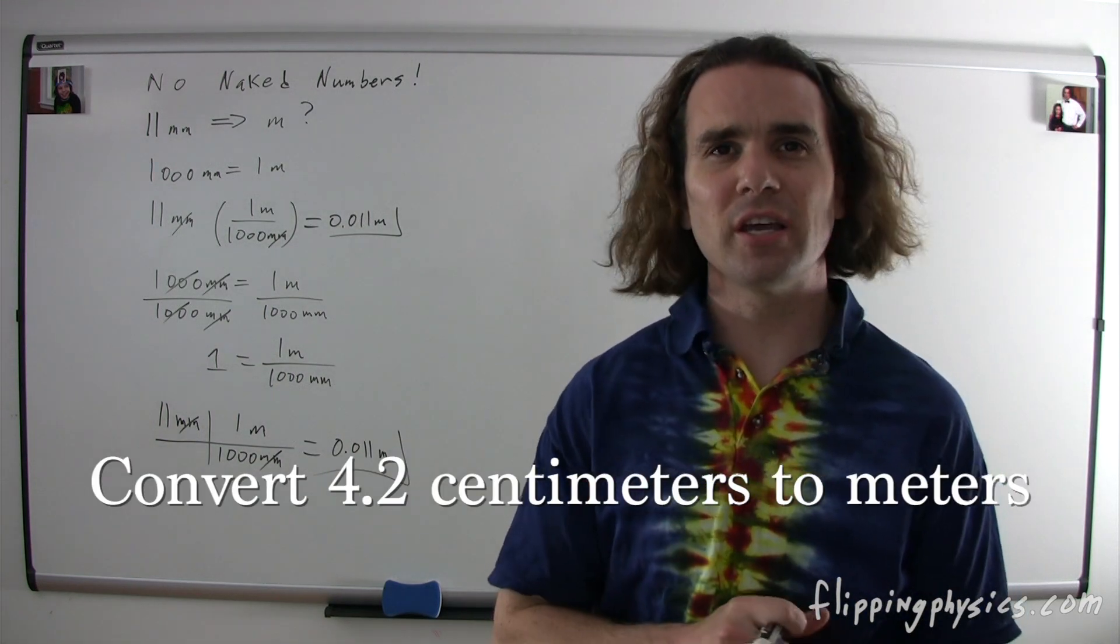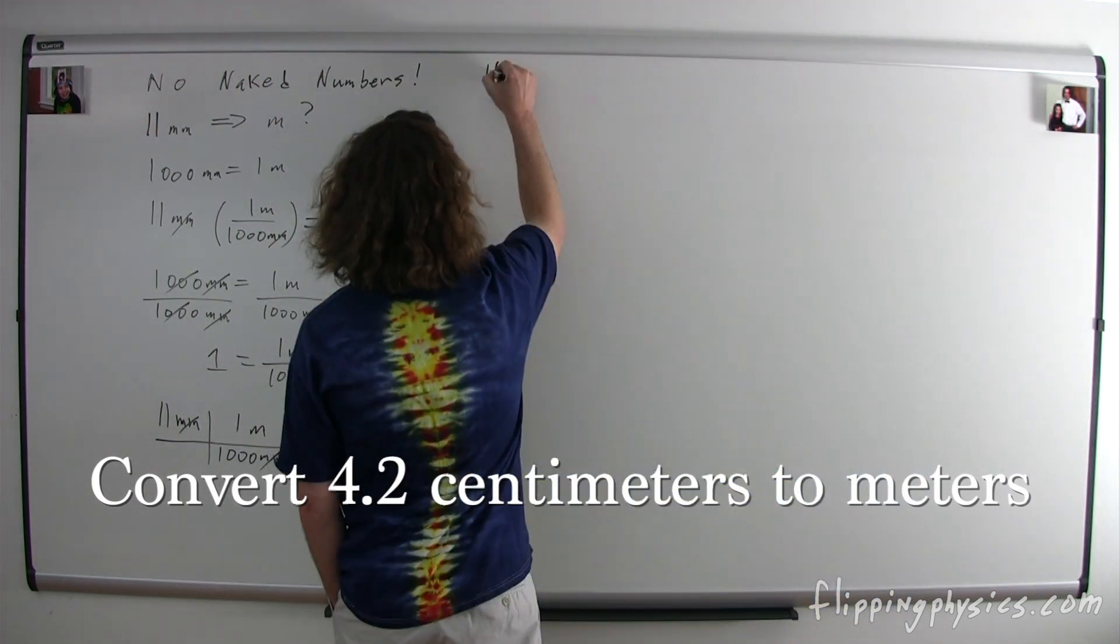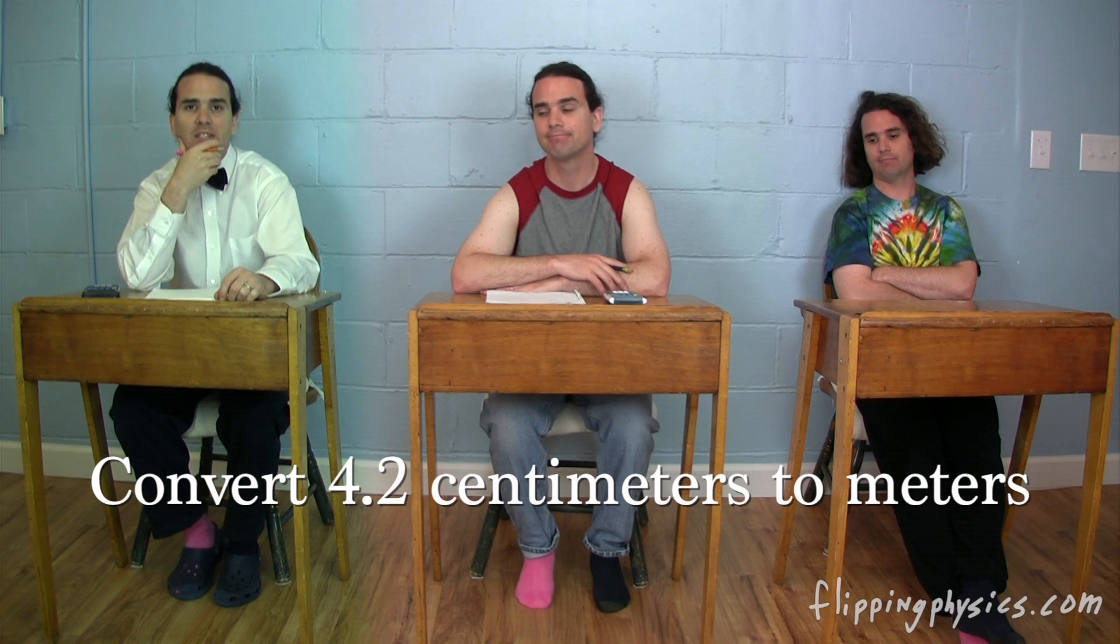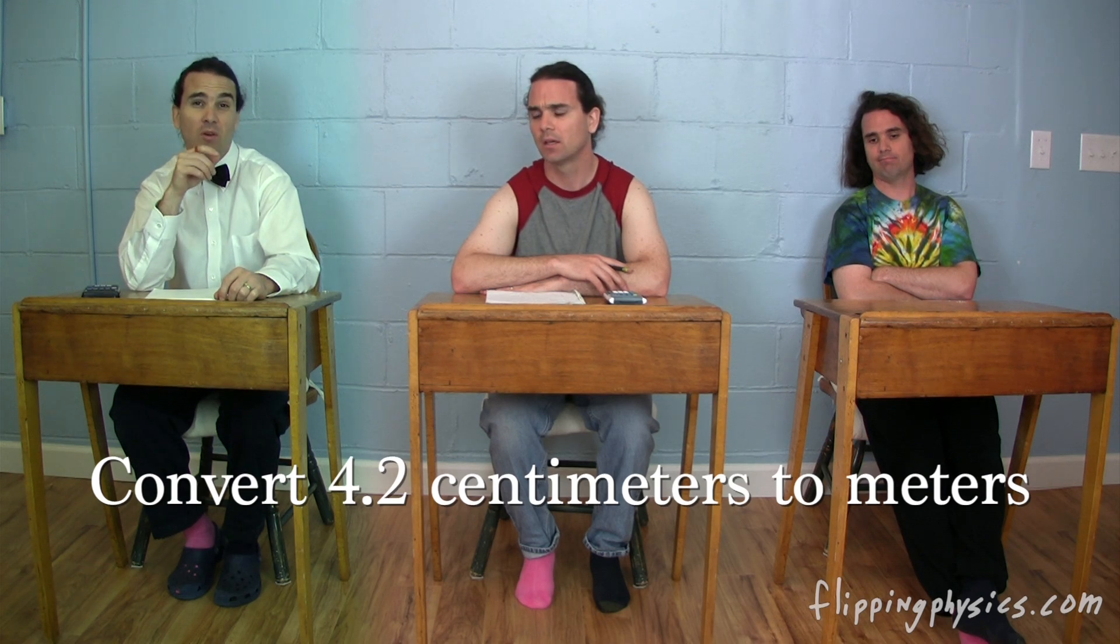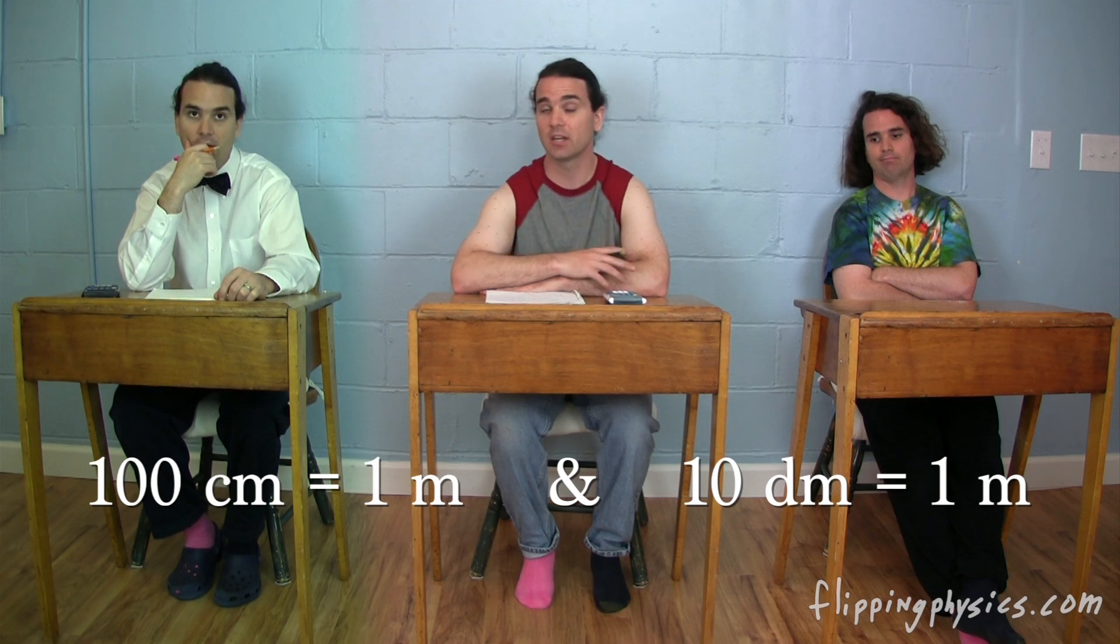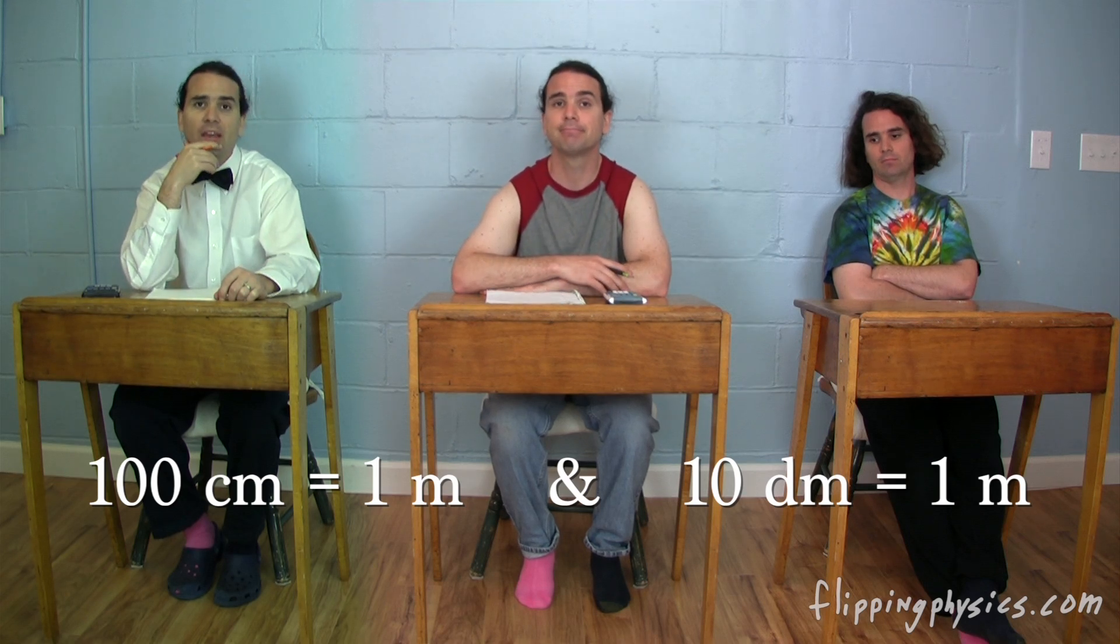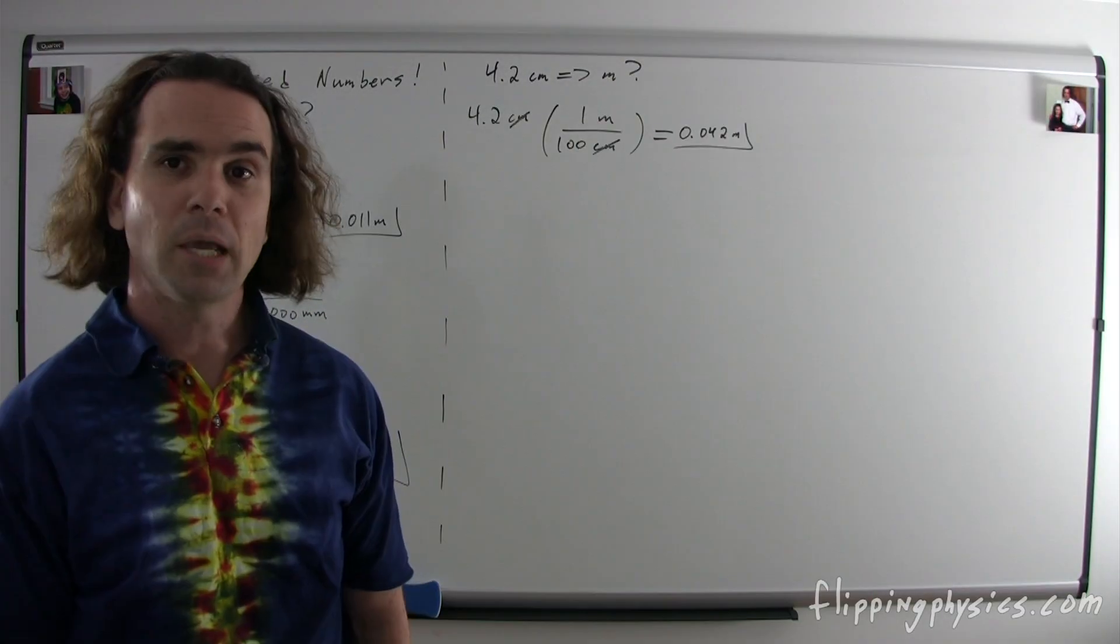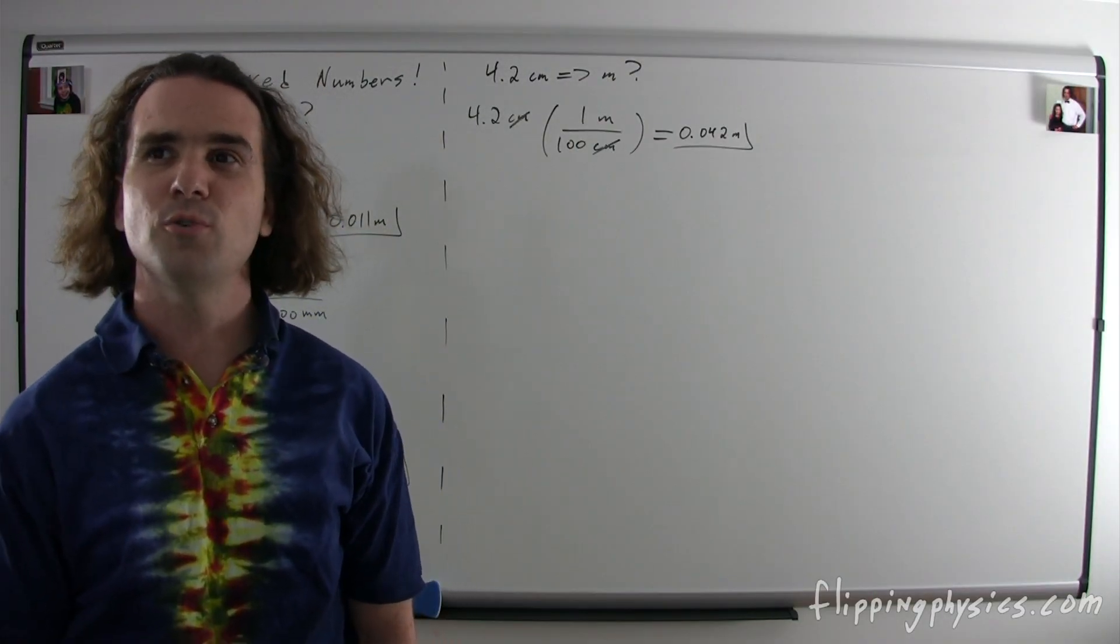Next, let's convert 4.2 centimeters to meters. Billy, can you give this one a try? Please convert 4.2 centimeters to meters. Let's see. There are 10 centimeters in 1 meter. Actually, Billy, it's 100 centimeters in 1 meter. You are thinking of decimeters. Right. Thanks, Bobby. Because 100 centimeters equals 1 meter, we should multiply by 1 meter divided by 100 centimeters because that equals 1. And then the centimeters cancel out and we are left with 0.042 meters.